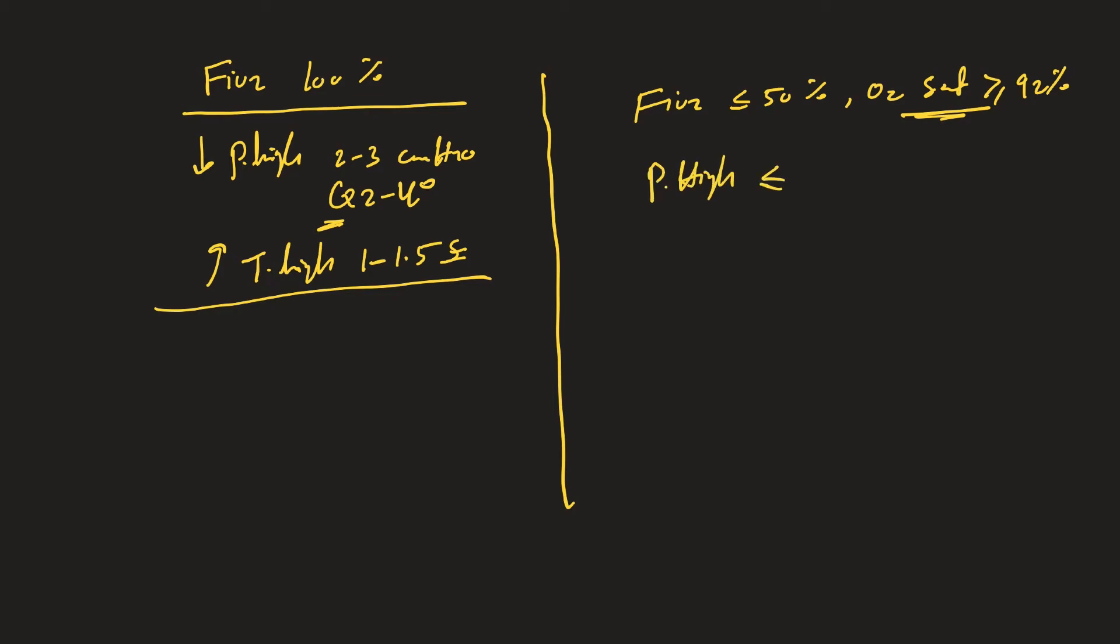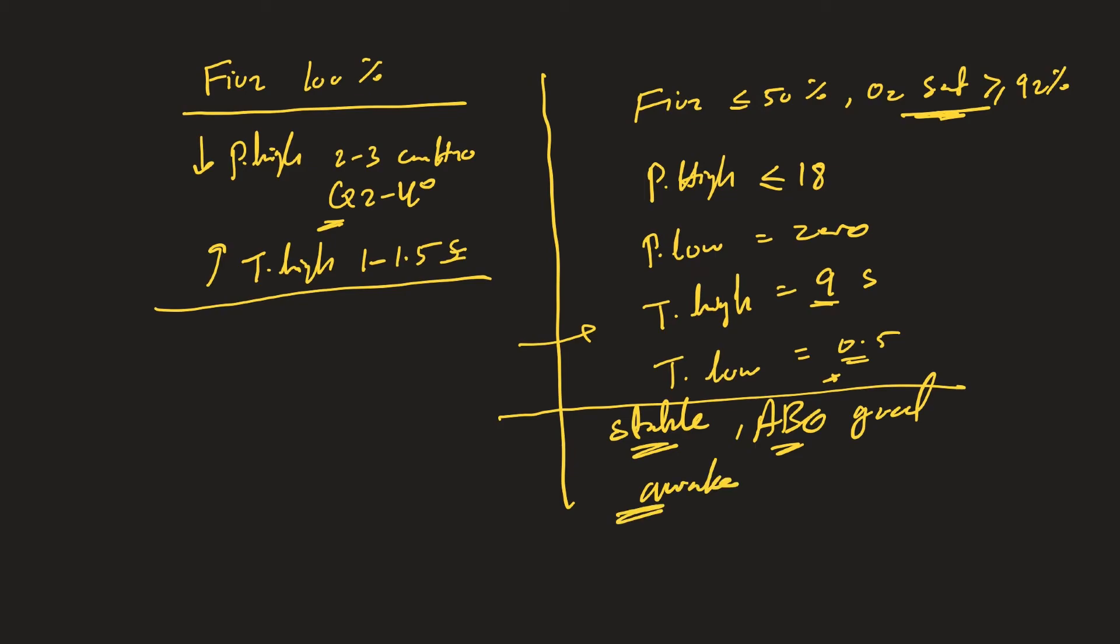P high equal to or less than 18, P low equals zero, T high equal to nine seconds, T low 0.5 seconds, respiratory rate depending on these values. At that point with these values, plus patient is stable hemodynamically, not on vasopressors, ABG looking good, patient awake, you may start thinking it's time to do SBT.